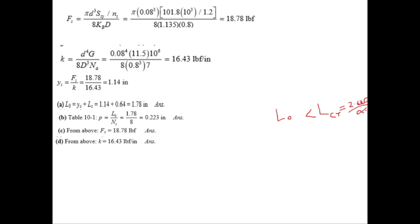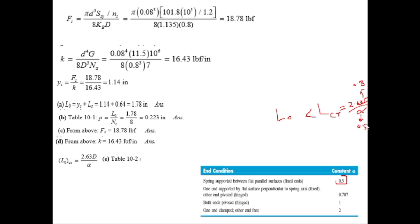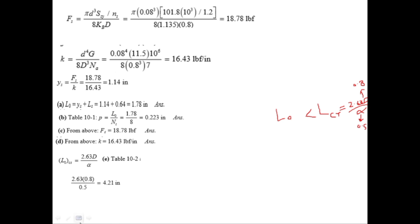Alpha value can be taken from table 10.2. When the spring is supported between two parallel flat plates then alpha is 0.5, and D is 0.8. So 2.63 into 0.8 divided by 0.5, so L critical is equal to 4.21 inches. This value is greater than L0 which was 1.78, so buckling will not occur.